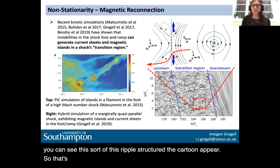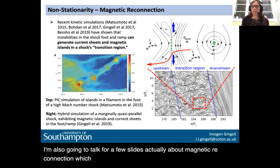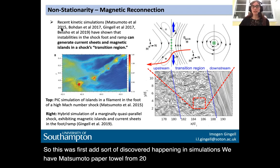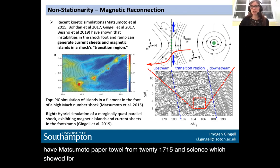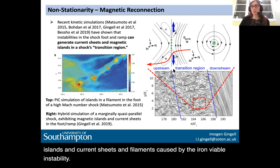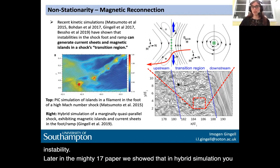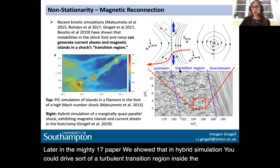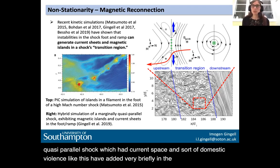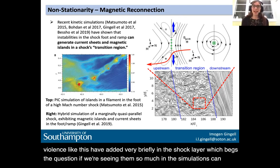I've also been very interested in magnetic reconnection in shocks over the last few years. This was first discovered happening in simulations — the Matsumoto et al. 2015 paper in Science showed that for a fully kinetic PIC simulation, you could generate magnetic islands and current sheets on filaments caused by the ion Weibel instability. In my 2017 paper, we showed that in a hybrid simulation, you could drive a turbulent transition region inside a quasi-parallel shock with magnetic island structures embedded very briefly in the shock layer — which begged the question: if we're seeing them so much in simulations, can we spot them in the data? The answer in 2018 was yes.